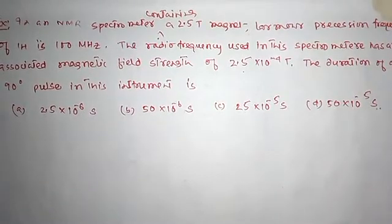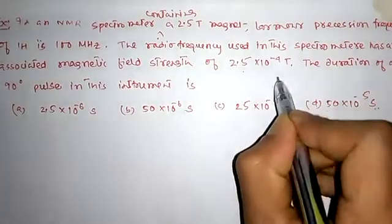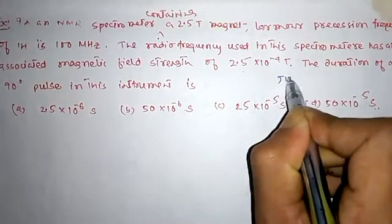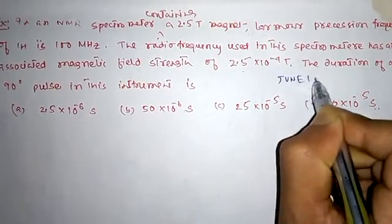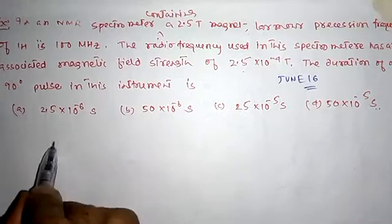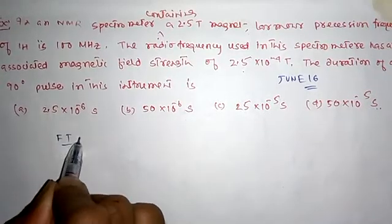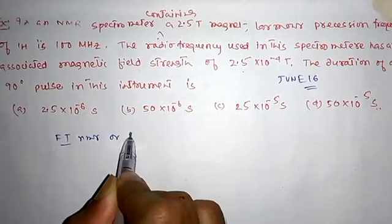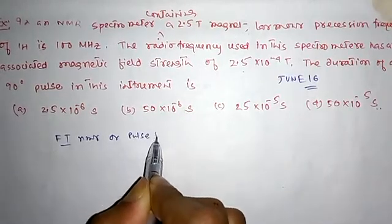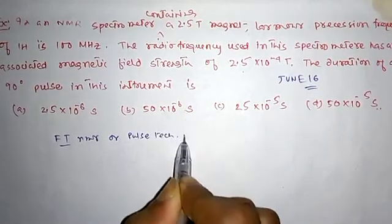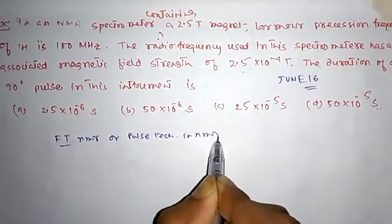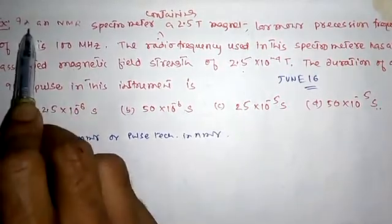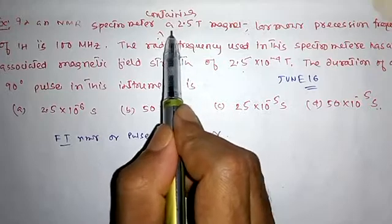Hello guys, this question appears in CSIR NET in June 2016. It is a question from FDNMR, or pulse technique in NMR. What is the question given here? In an NMR spectrometer containing a...